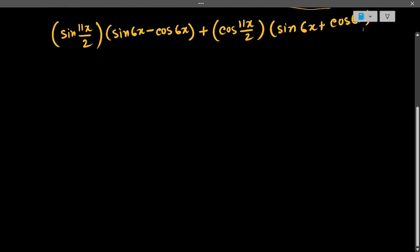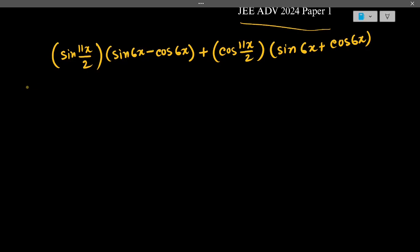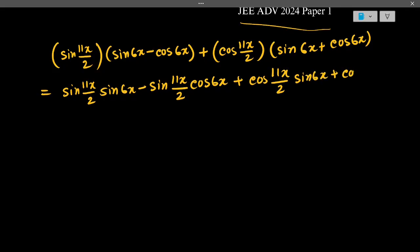Now we will open the brackets. So it will be sin(11x/2)sin 6x - sin(11x/2)cos 6x + cos(11x/2)sin 6x + cos(11x/2)cos 6x.